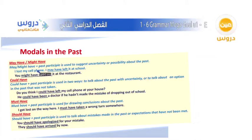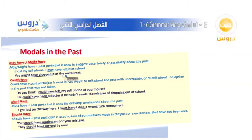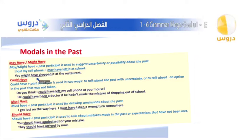For example: I lost my cell phone. I may have left it at school — he is not sure if he left it at school or not, so he says 'I may have left it at school.' Another example: You might have dropped it at the restaurant. Here, 'you might have dropped it' expresses possibility.